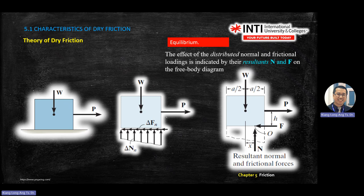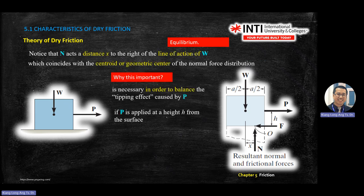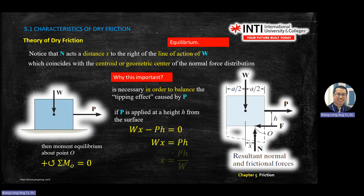These are the general steps every time you see a friction question or a question asking you to determine the friction coefficient. When summing moments about point O, W times X is positive anticlockwise, and P times H is negative clockwise. This sign convention is used only in scalar analysis — in vector analysis you use i, j, k notation and do not draw these arrows.